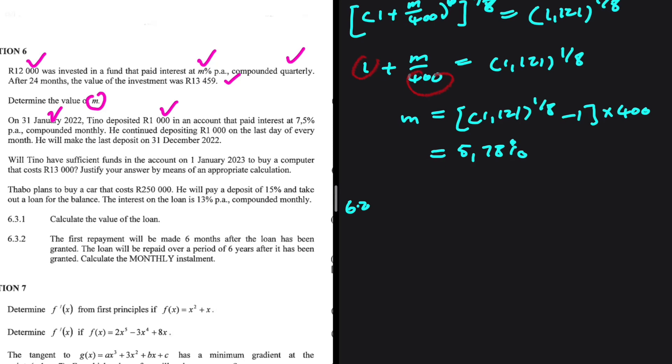Will Tino have sufficient funds in the account on 1 January 2023 to buy a computer that costs 13,000? Justify your answer by means of an appropriate calculation. Let's make sense of our situation.